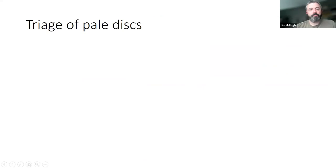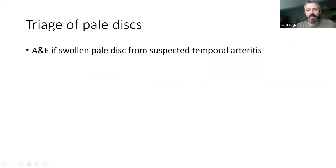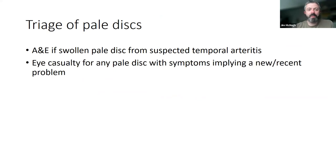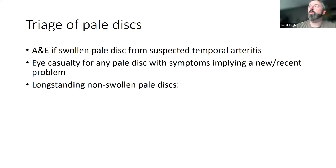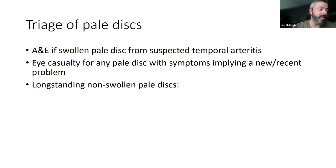Triage for pale discs: if you think they've got temporal arteritis — pale, swollen disc — it's really urgent, they need to go to A&E. Most other pale discs need to go to eye casualty if there's some kind of symptom implying it's not a long-standing problem. Lots of people have long-standing pale discs — if they lost their vision in 1978, that's obviously not an emergency. But if they have no idea why the disc is pale, it's possible there's a tumour that's been slowly progressing for 40 years, so something long-standing that's totally unexplained is worth a routine referral.